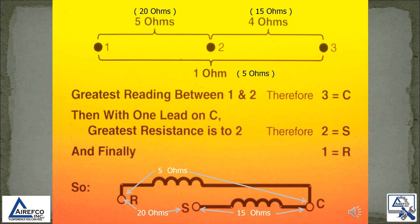The greatest reading is between terminals 1 and 2, which would be our run and start terminals, and that would be 20 ohms. Therefore terminal 3 is your common lead. Then with one lead on common, the greatest resistance is terminal 2, which is the start winding at 15 ohms. And finally terminal 1 is our run winding, which is the least resistance of 5 ohms.